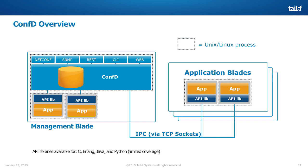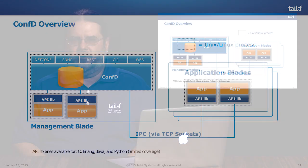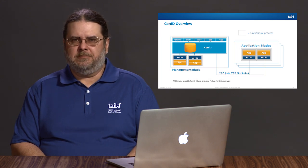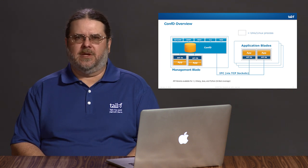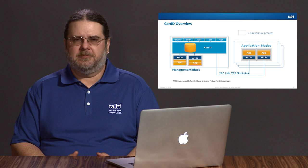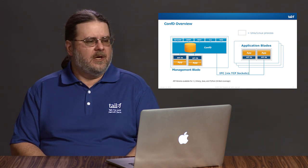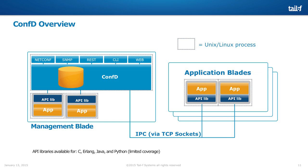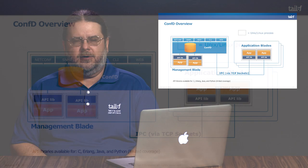This allows the system to easily distribute — whether you're doing a simple one-CPU basic network device or a very large, redundant chassis system. ConfD scales and fits any of those needs. Your applications can be running locally with ConfD, or they could be off on a line card, an application blade, or another system, as long as there's TCP connectivity possible so that the library can communicate with the ConfD daemon.